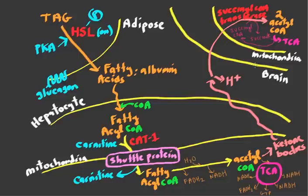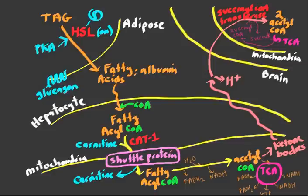The brain and other cells that can take up these ketones likely have transporters for them. The succinyl-CoA transferase enzyme hands off a CoA to make two acetyl-CoA molecules, which then enter the TCA cycle — in this case, in the brain mitochondria. We're essentially shuttling acetyl-CoA from the liver to other cells that need energy during the fasting state. Once acetyl-CoA is in the mitochondria, the brain doesn't distinguish whether it came from glucose or ketones — it's the same substrate entering the TCA cycle to produce ATP.